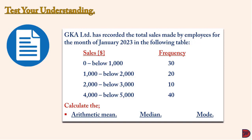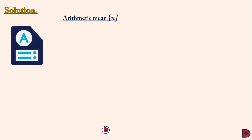Let's test understanding again. GKA has recorded the total sales made by employees for January 2023. Sales below $1,000 occurred 30 times; sales of $1,000 to below $2,000 is 20; sales of $2,000 to below $3,000 is 10; sales of $4,000 to below $5,000 is 40. We have to calculate the arithmetic mean, the median, and the mode. This is a continuous variable question.